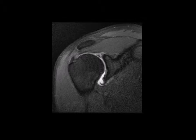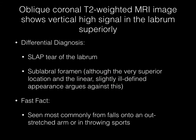Now pause your media player. This oblique coronal T2-weighted MR image of the shoulder demonstrates vertical high signal in the labrum superiorly. The differential diagnosis includes a SLAP tear of the labrum. Sublabral foramen could also be mentioned, although the very superior location and the linear, slightly ill-defined appearance argues against this.